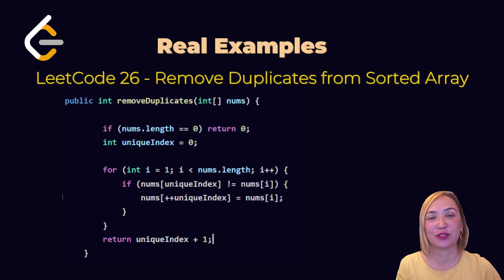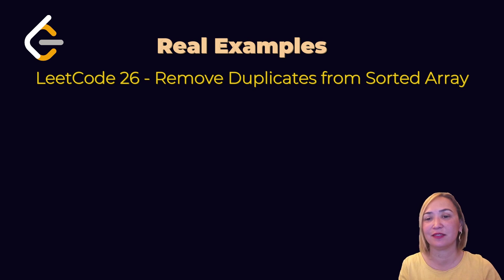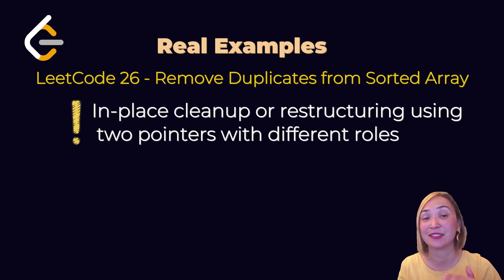Remove duplicates from sorted array: Define two pointers, current index and unique index. They will move in the same direction. When unique index value not equal to current index value, increase the unique index and write the current index value in unique index. In-place cleanup and restructuring.